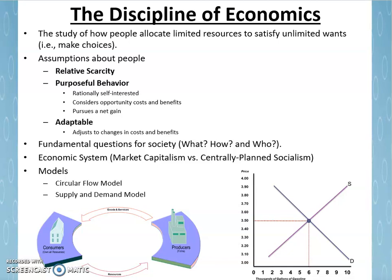Let's begin by talking about the discipline of economics in general. This is an econ class, so reminding ourselves of what economics is will be a good foundation. Economics is the study of how people allocate limited resources to satisfy unlimited wants — that is, how people make choices. In this sense, it becomes a study of human behavior, like many other social sciences, from sociology to anthropology to psychology and political science. We're all interested in how people make decisions and how that shows up as human behavior.